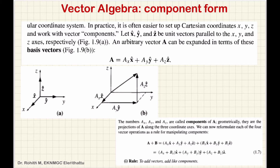The Cartesian coordinate system — this is the vector component formula. Suppose we have a Cartesian coordinate system. We have x, y, z directions — we have a coordinate system with x direction, y direction, and z direction.